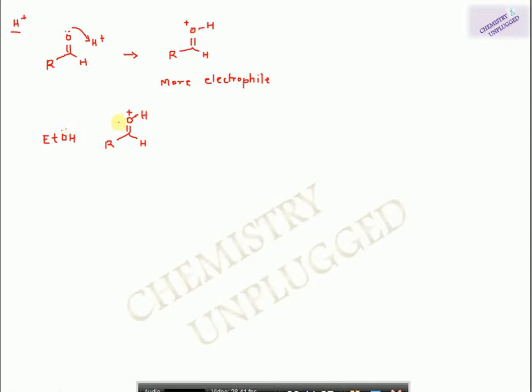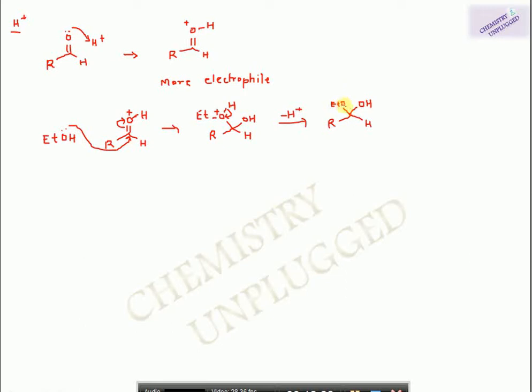The first step is the same as before: the lone pair on the oxygen of ethanol attacks the carbonyl carbon, shifting the bond so we have -OH and -OEt. Then, since this oxygen has a positive charge, the O–H bond breaks and H⁺ is removed — because it is acting as a catalyst it is regenerated. So we have a molecule of hemiacetal.